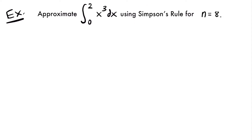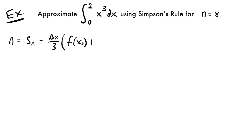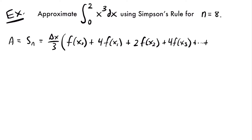In order to approximate the area under a function using Simpson's rule, you need to know the formula. That formula is that the area is equal to S sub n — which means Simpson's rule with n subintervals — and that equals delta x divided by 3, times f of x sub 0, plus 4 times f of x sub 1, plus 2 times f of x sub 2, plus 4 times f of x sub 3, and we continue until 4 times f of x sub n minus 1, then we add f of x sub n.